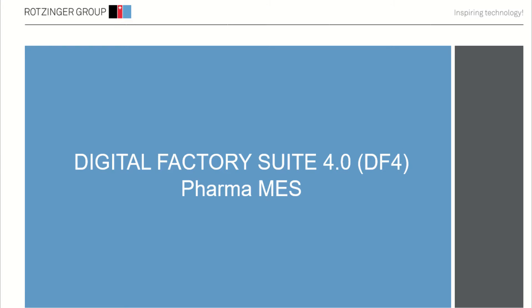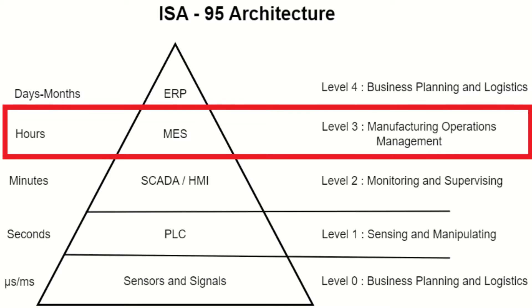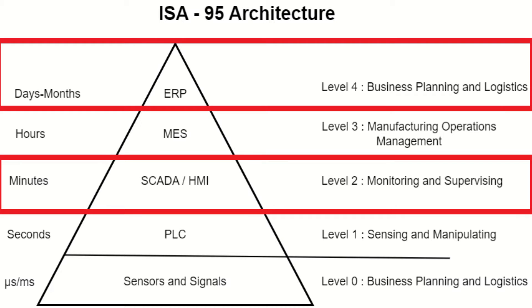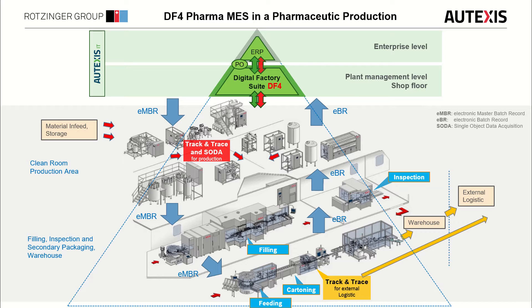Hello, my name is Anija George, I work at Rotzinger Pharma Pack. In this video I would like to give you a brief overview of the innovative functions of Digital Factory for Pharma MES that will modernize your production. DF4 Pharma MES operates as a Manufacturing Execution System (MES) in Level 3 of the four-level model defined in the ISA-95 standard. It is located between the Level 4 enterprise system responsible for business planning and logistics, and Level 2 production supervisory systems as well as Level 1 production control systems like PLCs and PCSs.